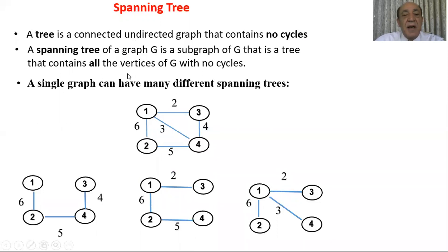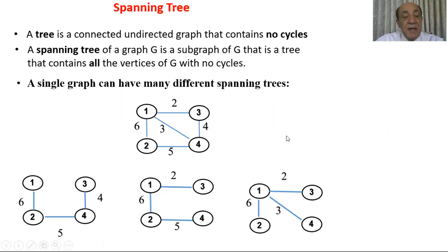A single graph can have many different spanning trees. For example, if we have a graph with four nodes and five edges, we can generate different spanning trees. The cost of one is 15, another is 13, but the cost of another is 11, so they differ on cost.